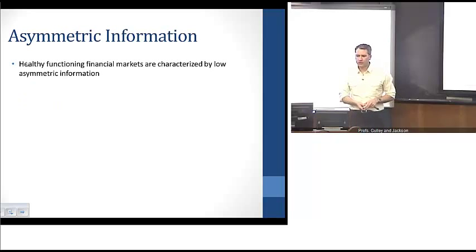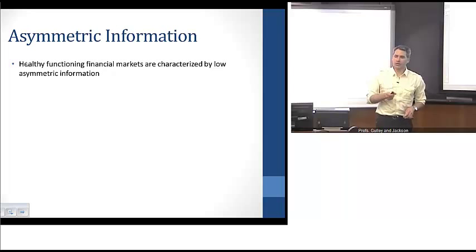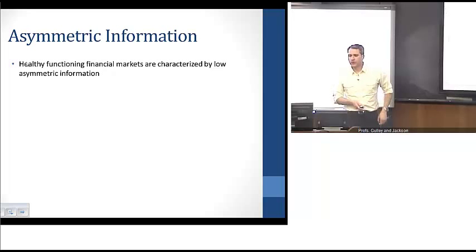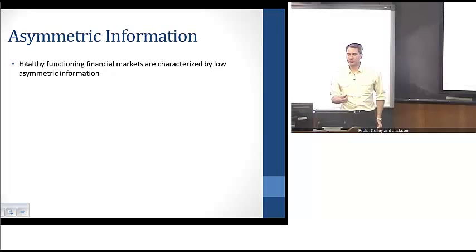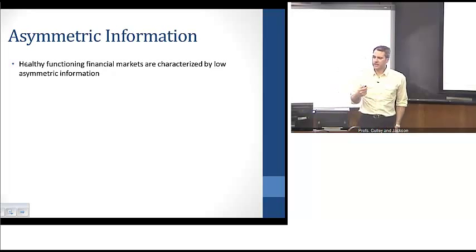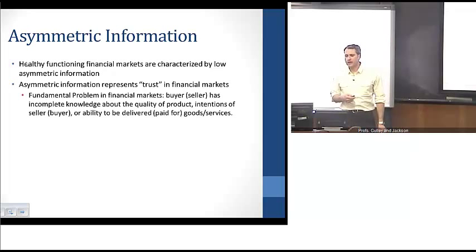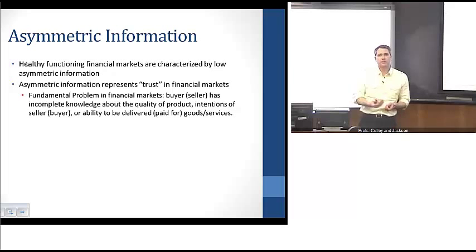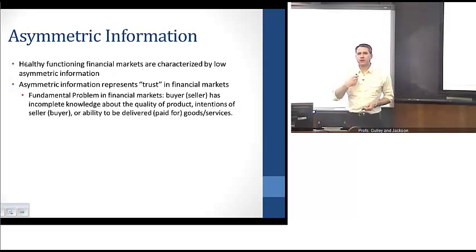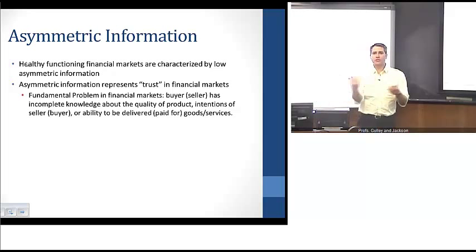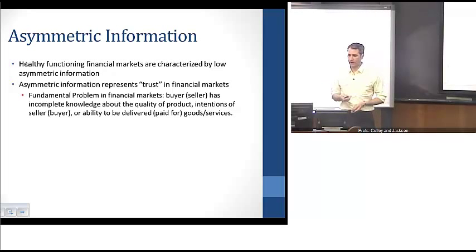In order to understand the genesis of financial crisis, it's important to understand the role that asymmetric information plays. With a healthy, functioning financial system, that's typically characterized by low asymmetric information. Asymmetric information really represents trust in financial markets — the idea that parties to a particular transaction don't have complete information about the intentions or motives of others.